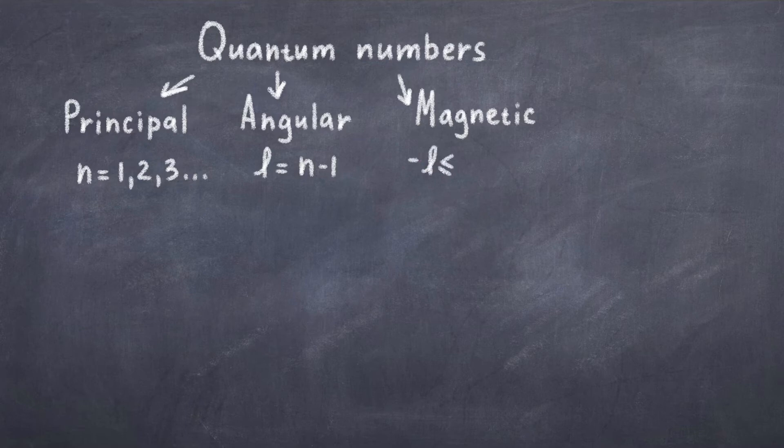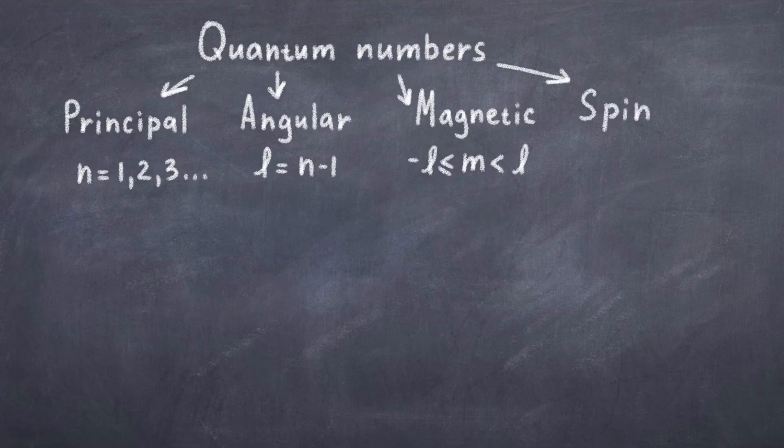We also have the magnetic number m, which is related to the energy shift of the shell. This number goes from minus l to l, thus if l is equal to 2, then m is equal to minus 2, minus 1, 0, 1 and 2.